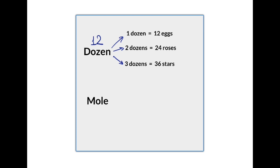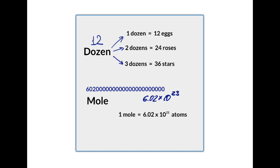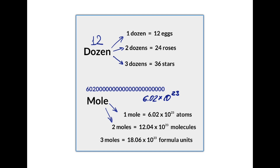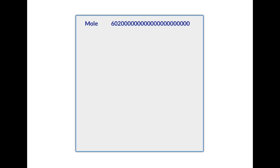In chemistry, the word mole also means a specific number. We can express it in scientific notation as 6.02 × 10²³. We will use it to count numerous objects in batches. One mole of atoms means that number of atoms, two moles of molecules means that mole number taken twice, and three moles of formula units means three times the mole number of formula units. So the mole is 6.02 × 10²³.